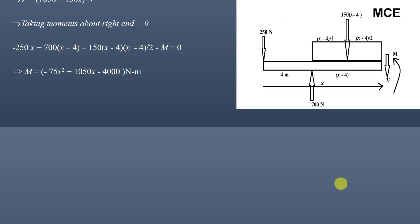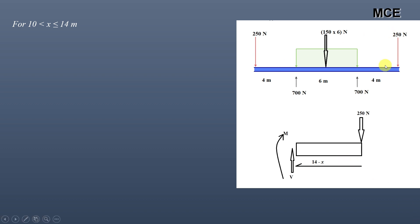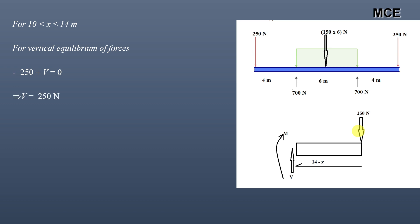For the last part of the beam, we cut the section at distance x, so the remaining right side portion is 14 minus x. For x greater than 10 and less than or equal to 14 meters, taking the right side of the section, assuming shear acts in the upward direction and moment is clockwise, the only force on this portion is 250 newtons. For vertical equilibrium: minus 250 plus V equals zero, giving V equal to 250 newtons.